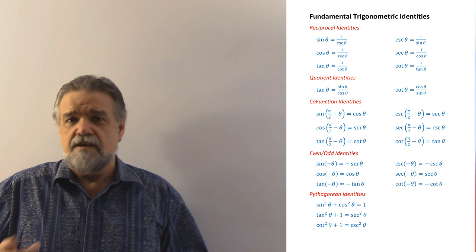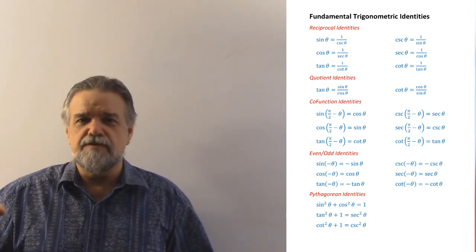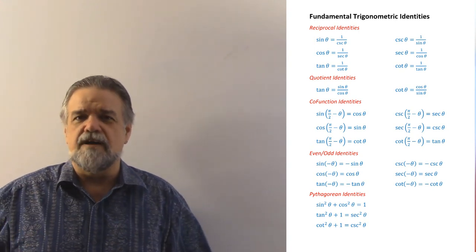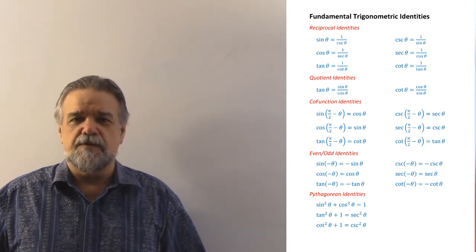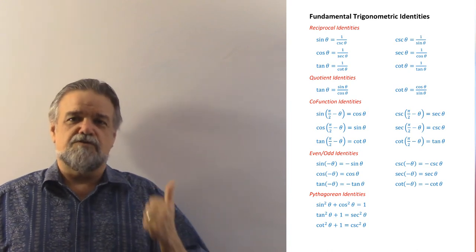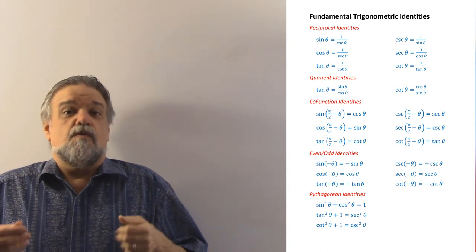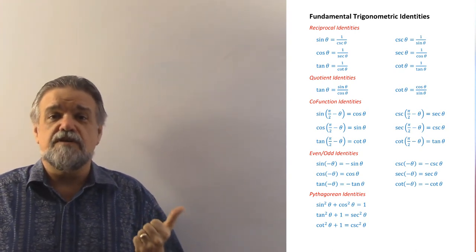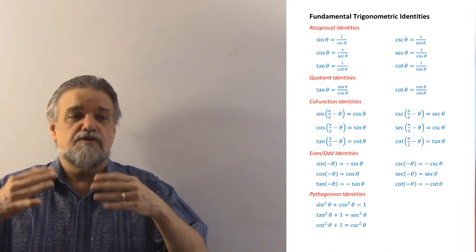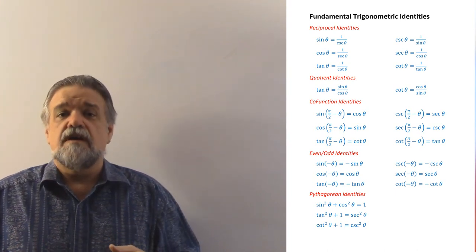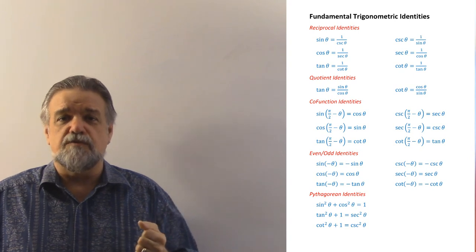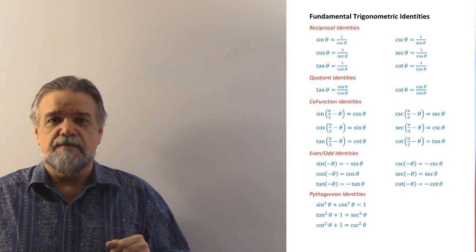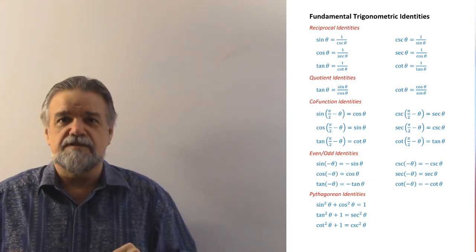To get the other two Pythagorean identities, just divide every term by sine squared or by cosine squared to easily derive them. These are the fundamental trigonometric identities. Why do we need them? This is our tool belt — what we're going to use to simplify expressions and solve equations, to make expressions much simpler and easier to deal with. See you in the next video.